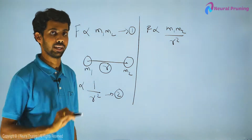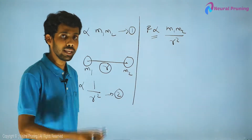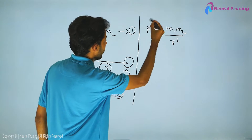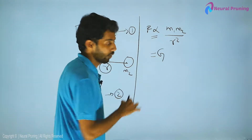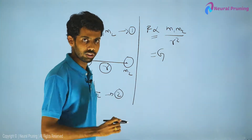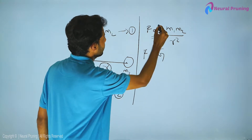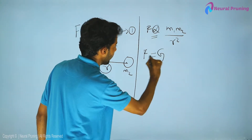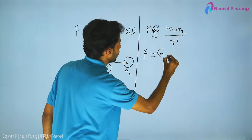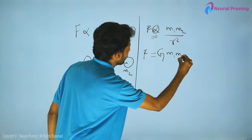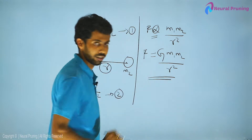In physics and mathematics, we don't like the proportionality sign, so we replace it with an equality sign and a proportionality constant, which we call the universal gravitational constant G. This gives us F = G × m₁ × m₂ / r². This is known as the universal law of gravitation.